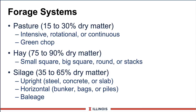The third forage system is silages, which means the feed is partially wilted down, in most cases to 35% to 65% dry matter. It is then harvested and stored in one of three types of structures. The first is a vertical or upright type storage — this includes steel silos such as harvesters, concrete, and slab type structures, though these are much less popular now due to high initial cost and the equipment needed to get feed out. A more popular system is horizontal type storage, which includes the bunker silo, bags — plastic bags laid horizontally and stuffed like a sausage with silage — or piles, which are bunkers without walls covered with plastic and tires. A third type increasing in popularity on smaller farms is baleage — round bales or big square bales wrapped in plastic and allowed to ferment in small packages, then fed to smaller groups of cows.